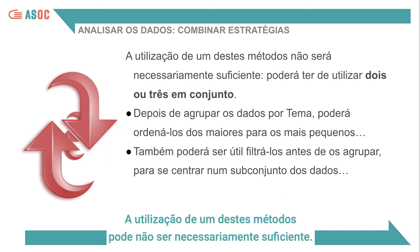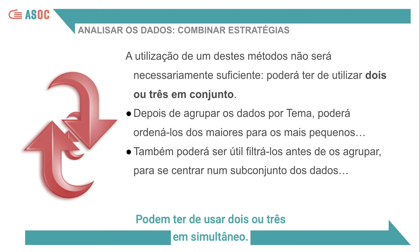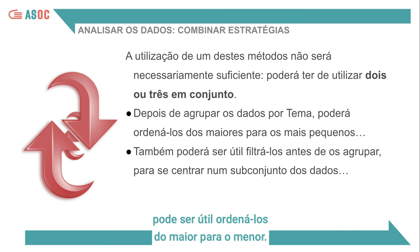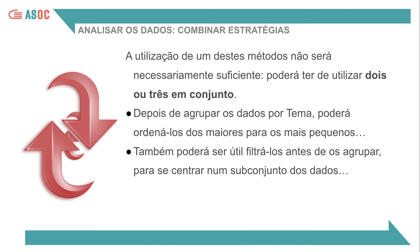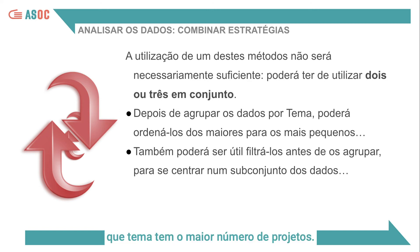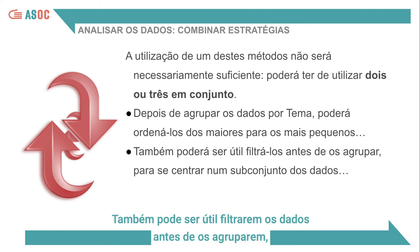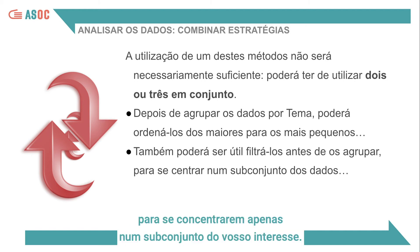Using one of these methods will not necessarily be sufficient. You may need to use two or three together. For example, having grouped the data by theme, it might be useful to sort them from the largest to the smallest. This will help you quickly understand which theme has the largest number of projects. The same could be done to sort projects by economic value. It could also be helpful to filter the data before grouping them so you can focus only on a subset that interests you.